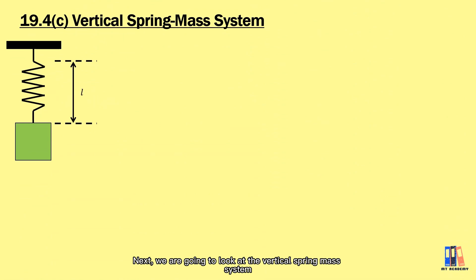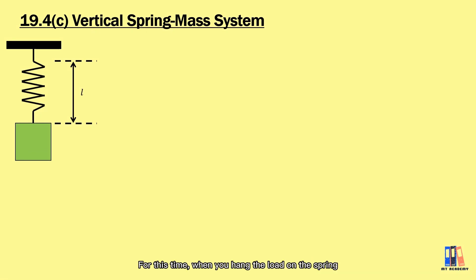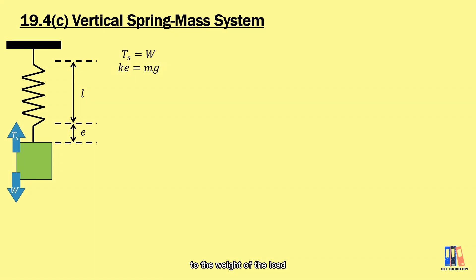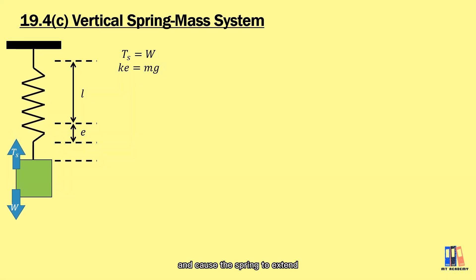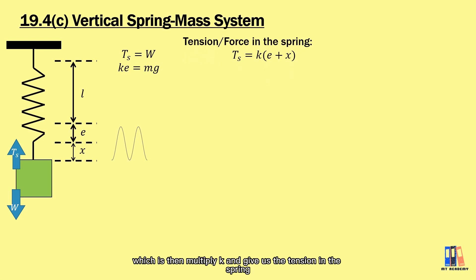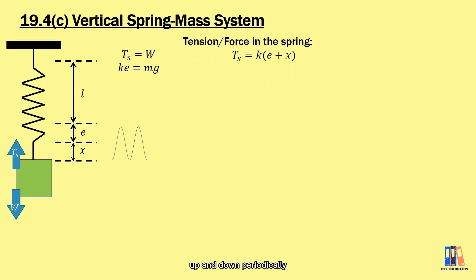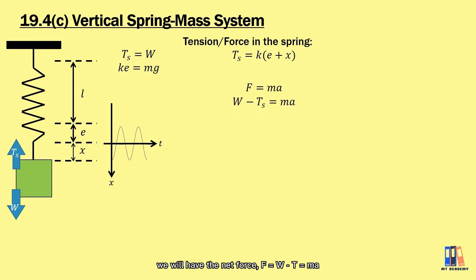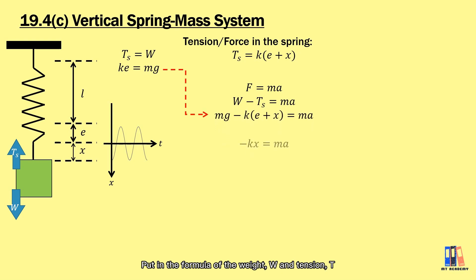Next, we look at the vertical spring-mass system. When the bob is hung on the spring, its weight causes the spring to extend by e. At equilibrium (before oscillation), the tension ke equals the weight mg. We then pull the bob down an additional distance x, so the total spring extension is e + x, giving tension k(e + x). When released, the bob oscillates up and down. Taking downward as positive and applying F = ma, the net force is weight minus tension, which simplifies to −kx = ma after substituting ke = mg.